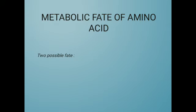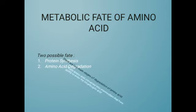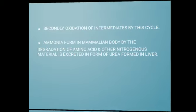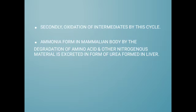The first topic is the metabolic fate of amino acids. There are two possible fates: protein synthesis and amino acid degradation. There are two main stages of degradation: first, amino acids are converted into intermediates that can enter the tricarboxylic acid cycle; second, oxidation of those intermediates by this cycle. Ammonia formed in the mammalian body by degradation of amino acids and other nitrogen material is excreted as urea.